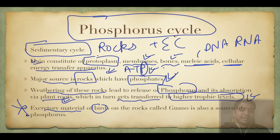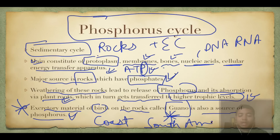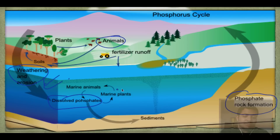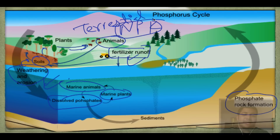Excretory material of birds on rocks is called guano - a very important term and also a source of phosphorus, especially seen on the South American coast of Ecuador and Chile. Looking at the diagram: weathering and erosion dissolves phosphate from rocks; it is absorbed by marine plants and animals. It also goes into soil via weathering and erosion, absorbed by plants and animals. Fertilizer runoff - fertilizers with N, P, and K also contain phosphorus which shows runoff into marine environments. Overall, phosphorus is mostly confined to the terrestrial part with negligible amounts in the atmosphere.